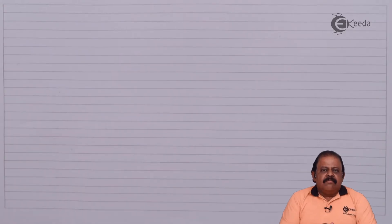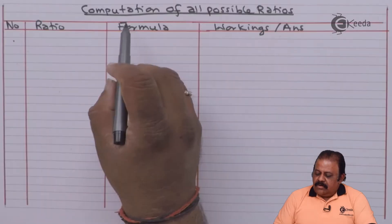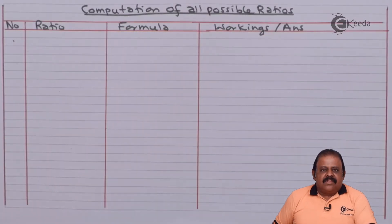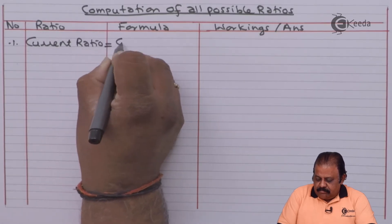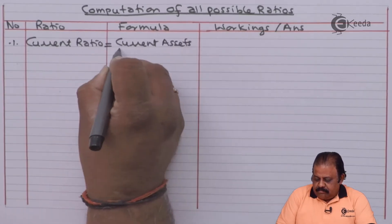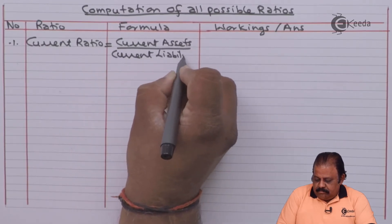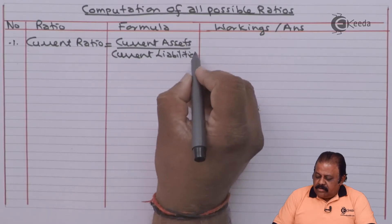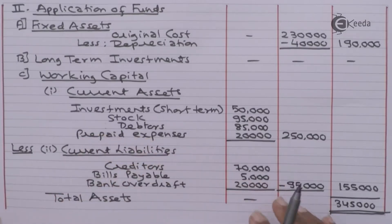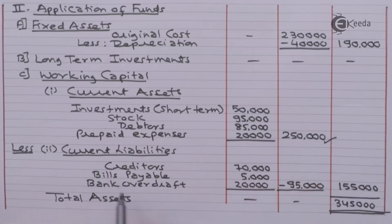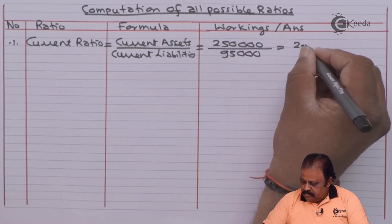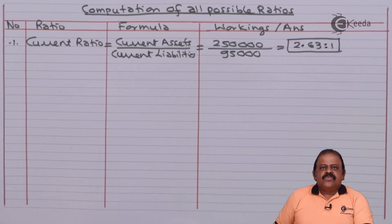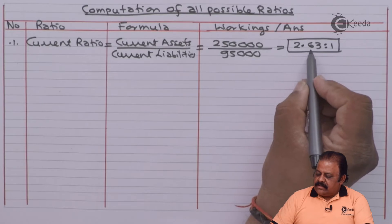We have arranged both the balance sheet and income statement in vertical format. Now let us calculate all possible ratios, starting with balance sheet ratios. Current ratio equals current assets divided by current liabilities: 2,50,000 divided by 95,000 gives a current ratio of 2.63 to 1.